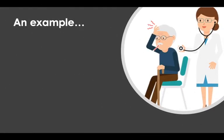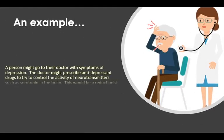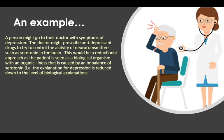An example: a person might go to their doctor with symptoms of depression. The doctor might prescribe antidepressant drugs to try to control the activity of neurotransmitters such as serotonin in the brain. This would be a reductionist approach, as the patient is seen as a biological organism with an organic illness caused by an imbalance of serotonin, and the explanation for depression is reduced down to the level of biological explanations.